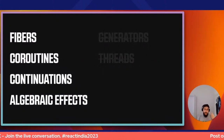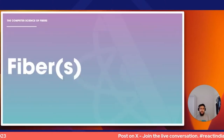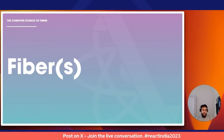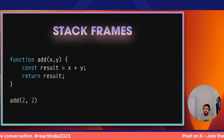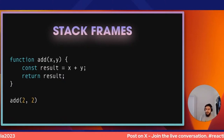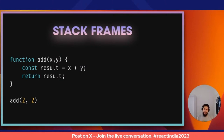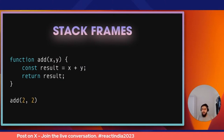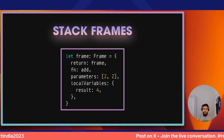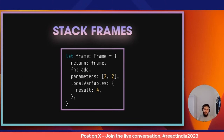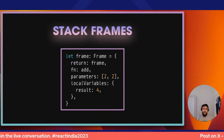That prompted me to dive into those words and what they meant — and that's the goal of this session: to make them make sense and show how they all piece together in the realm of React. Let's start with fibers. I love using stack frames to understand fibers. Take a simple JavaScript function `add` that takes two parameters x and y and returns their sum. If we were to visualize a stack frame for that, it would have the return frame, the function name `add`, parameters two and two, and the local variable result equaling four.